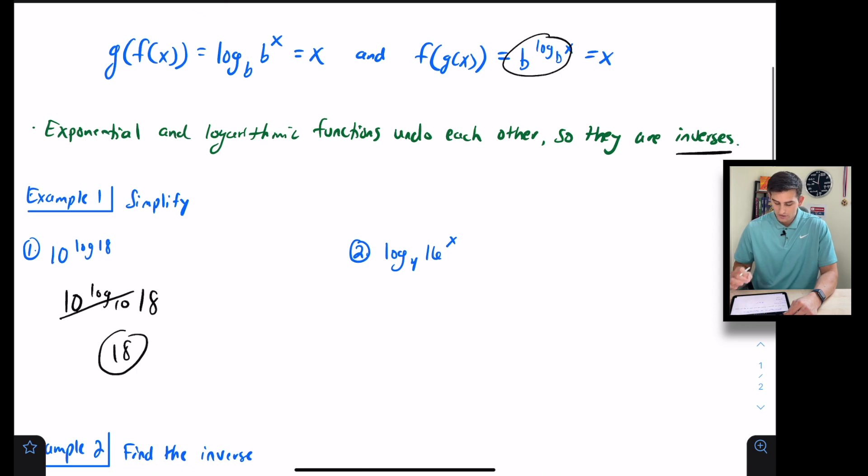For number two, notice we have log base 4 of 16^x. Can I write 16 with a base of 4? Yes, we could write this as log base 4 of 4^2, but we still have that x. By the power exponent rule, I could multiply the 2 and the x, so this would be log base 4 of 4^(2x). Since my base of my log is 4 and my base of my exponential is 4, those cancel out, so our answer would just be 2x.